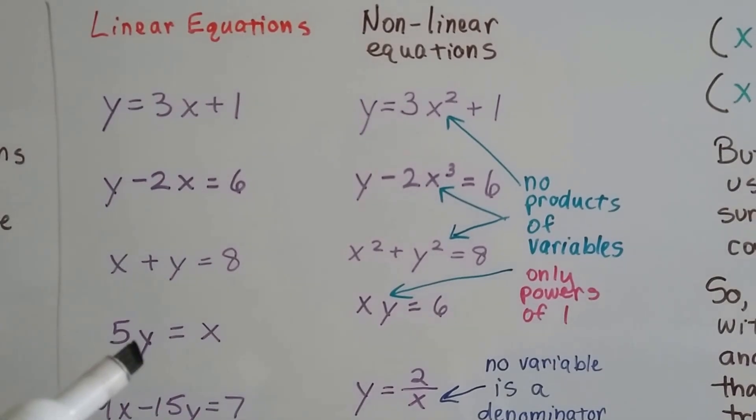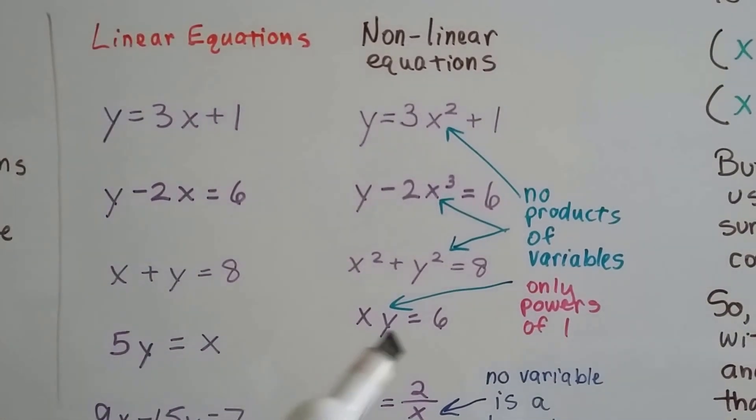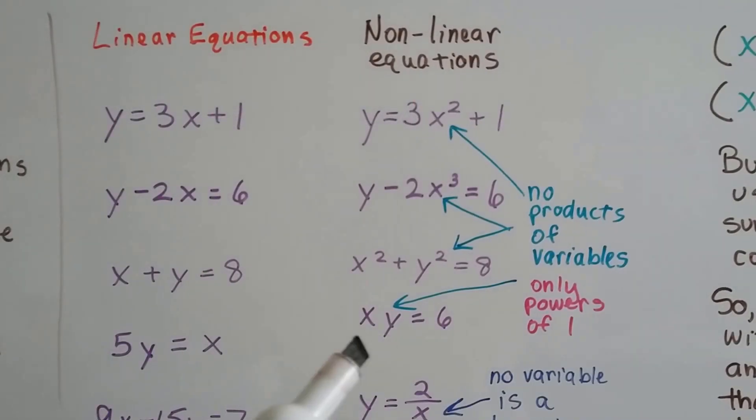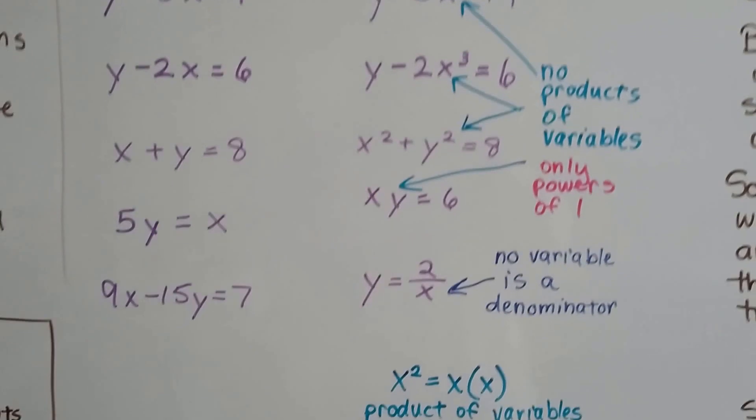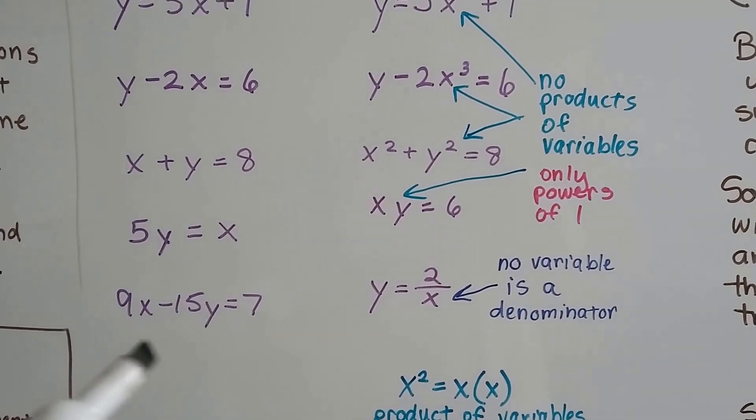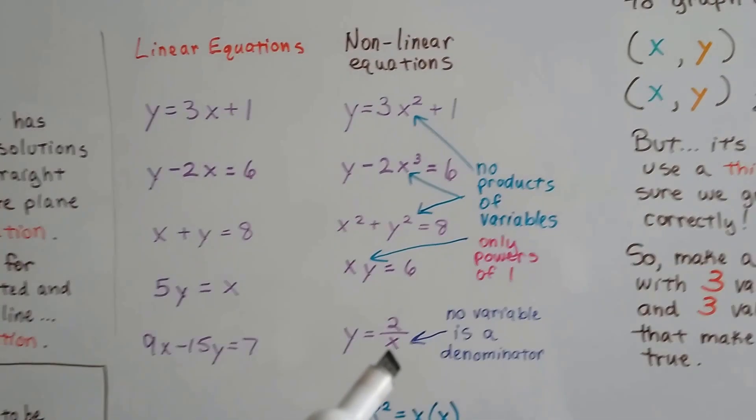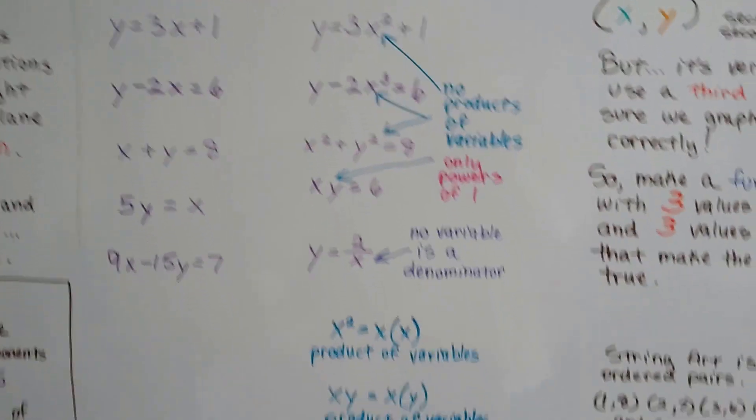If we have 5y equals x, that's linear. But if we have y next to x, like xy equals 6, nope, because those are products of variables. If we have 9x minus 15y equals 7, that's linear, that's okay. But if we have an x down here as a denominator, nope, that's not linear.